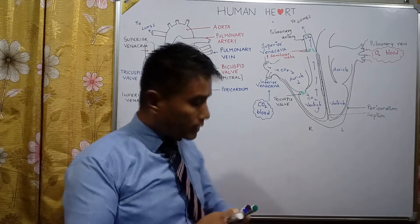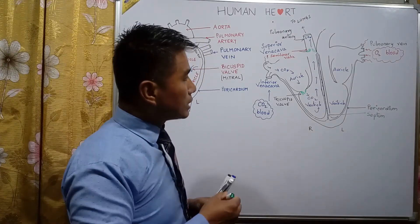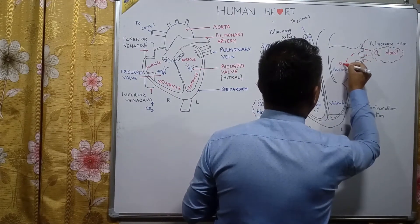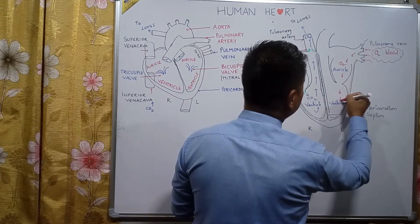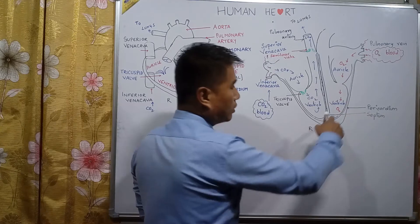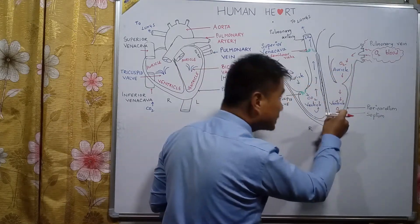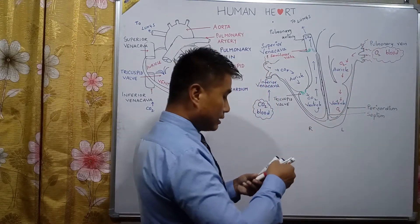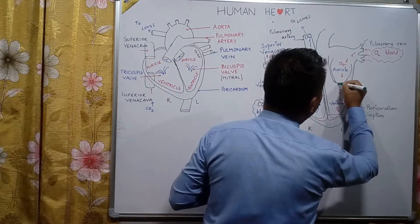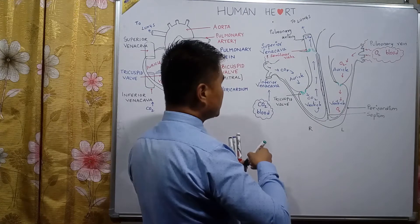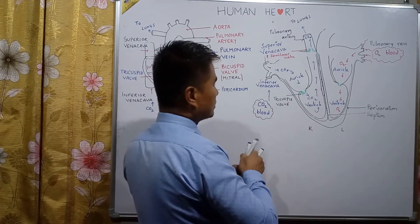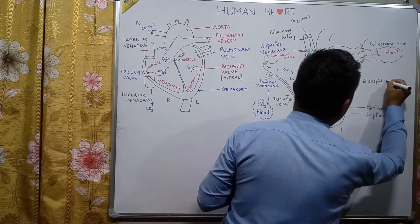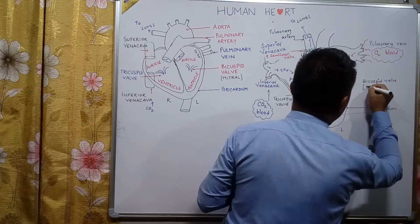When the left ventricle contracts, the oxygenated blood in the ventricle tries to flow back to the left auricle. But there is a valve which prevents this backflow, and that valve's name is the bicuspid valve, also known as the mitral valve.